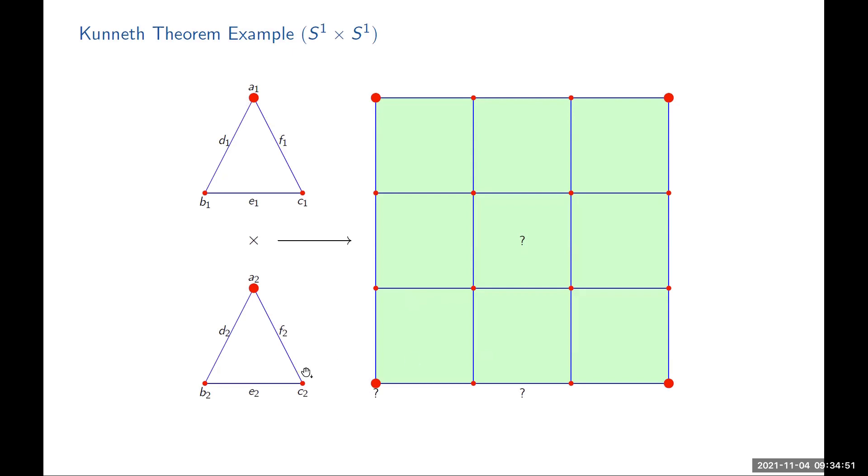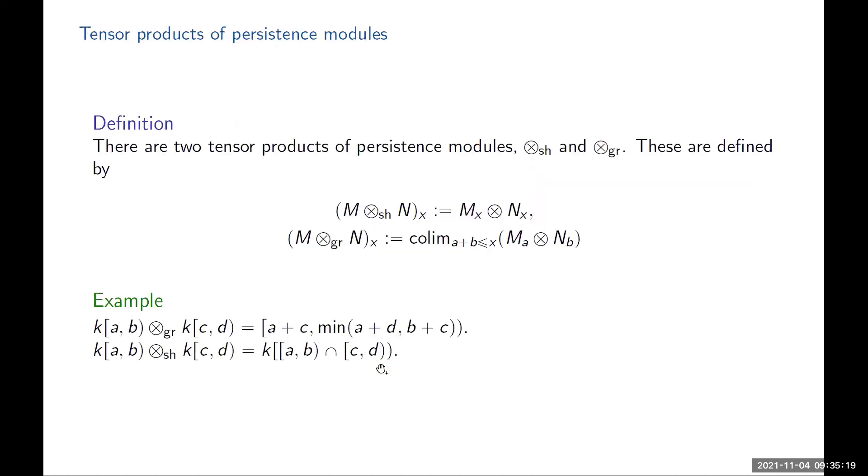The question is, if I have some filtrations on the triangle so I can compute the persistence modules, what is the filtration I need to put on this torus so that I can compute the persistence module of this filtration on the torus in terms of the other two filtrations I had from the triangles? What is the filtration value I need to put on this two cell? What about this one cell? What about the vertices? To do this, we need some notion of a tensor product between these objects, some tensor products of persistence modules.